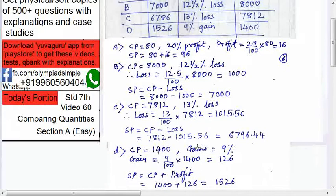Calculate the gains. Now, gains means profit. So 9 upon 100 into 1400. Cancel everything, 126.